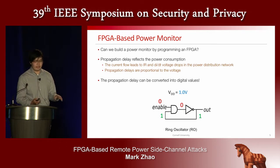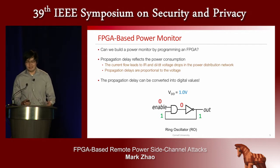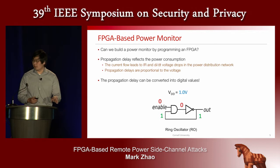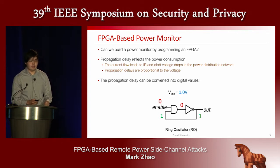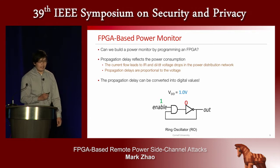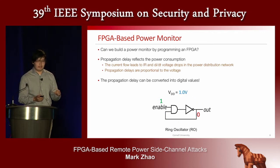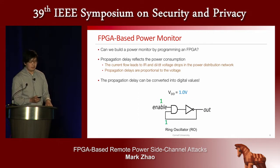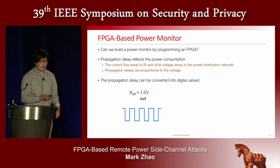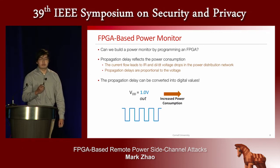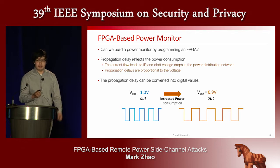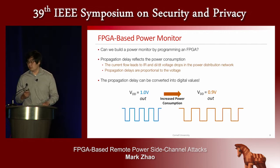These transient voltage fluctuations change how fast signals propagate through CMOS logic. We can digitize these propagation delay values using a ring oscillator, or RO. As shown in the figure, a ring oscillator is simply an AND gate connected to an inverter looped back on itself. When the enable signal is zero, the circuit is static. When enabled, a signal propagates around the ring oscillator and every oscillation the output value flips, producing a square wave. More power consumption reduces the supply voltage, which in turn reduces how fast the ring oscillators oscillate.